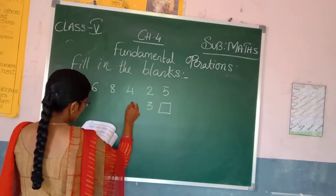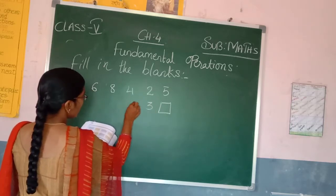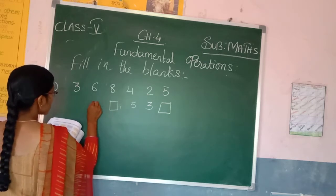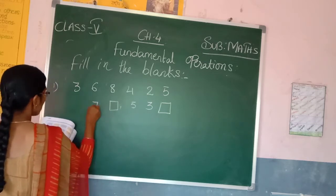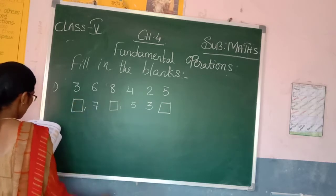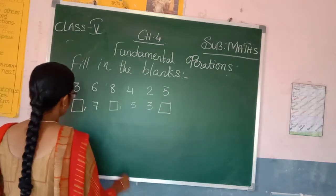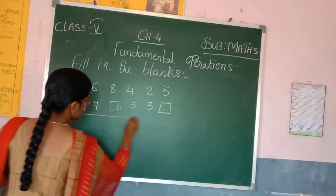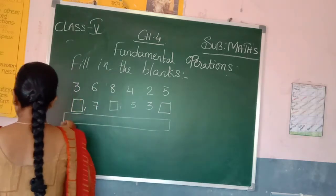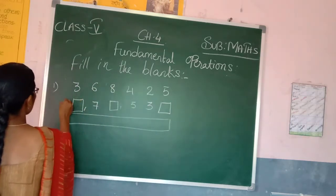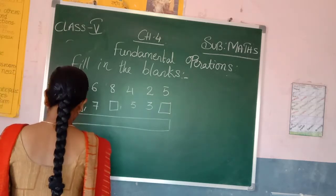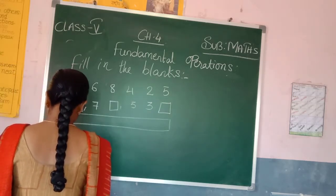Next, 3 here, 5 here and again a box is given for you. And again 7 and again 1. So see here what numbers are given. What numbers are missing here we have to do. And put the plus symbol everywhere without fail.